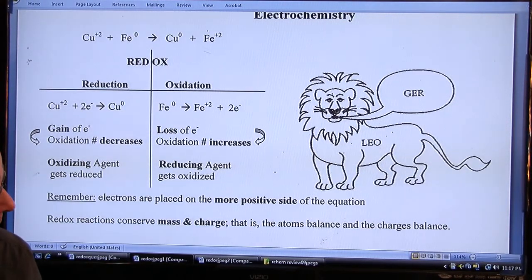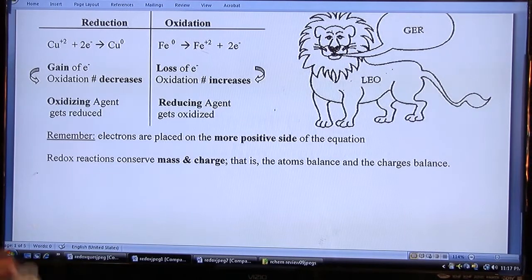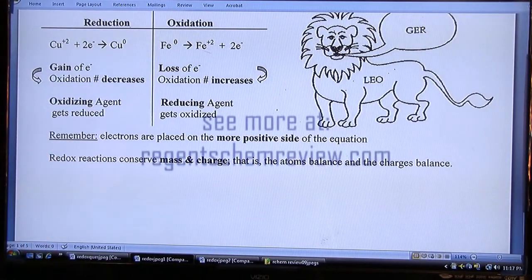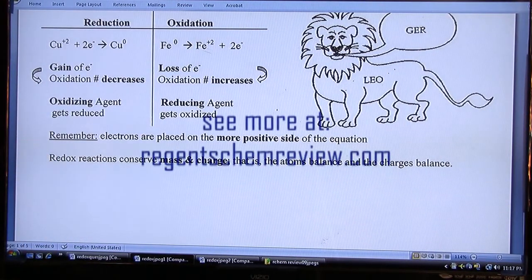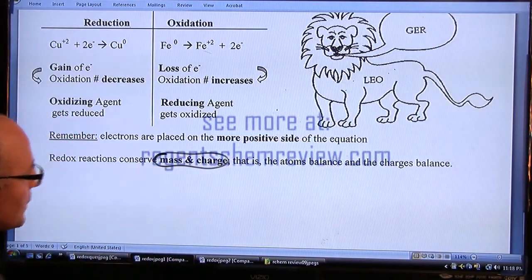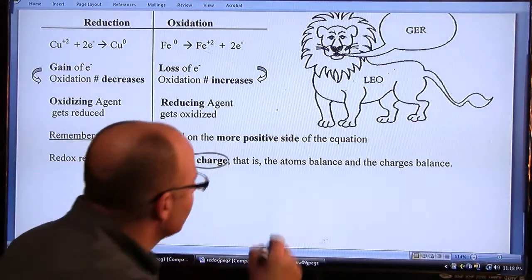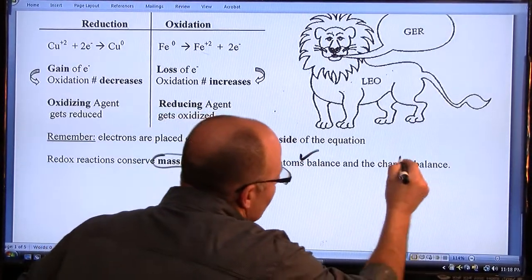Let me drop this down. Redox reactions conserve mass and charge. But what does that mean? That means they have to balance in terms of atoms and in terms of charges.